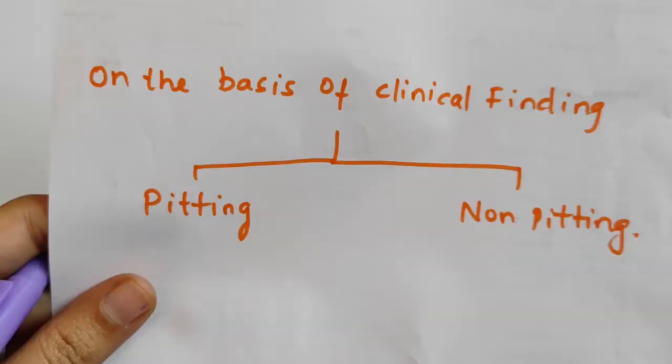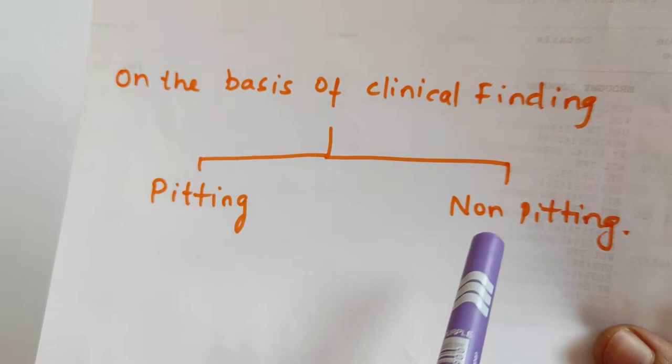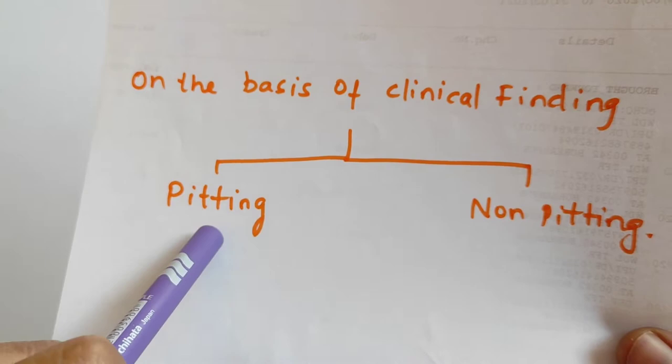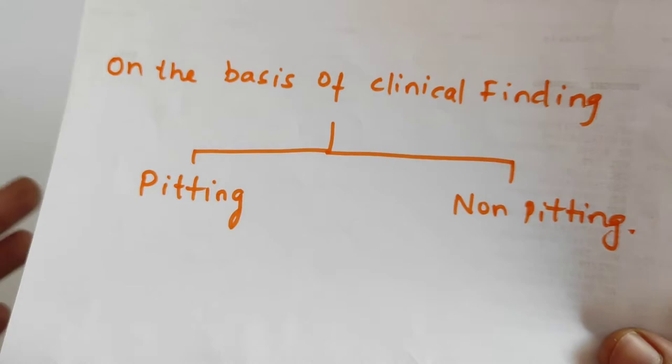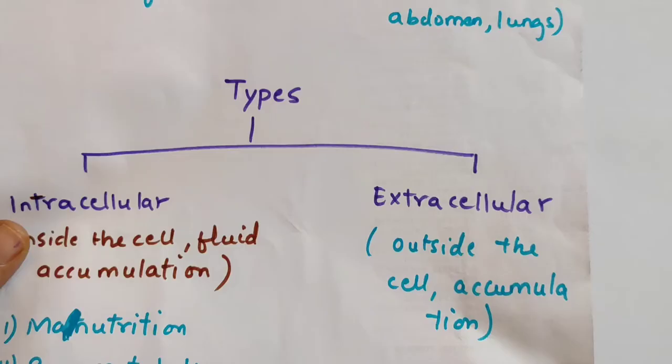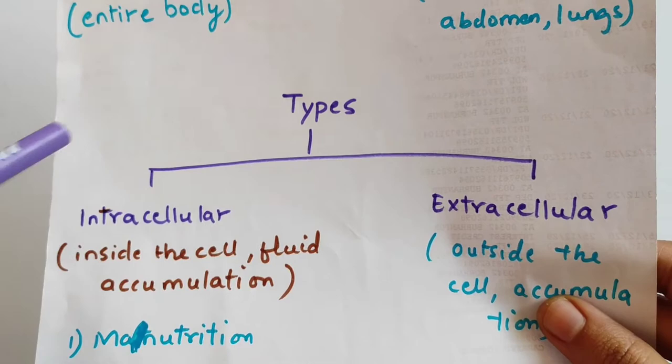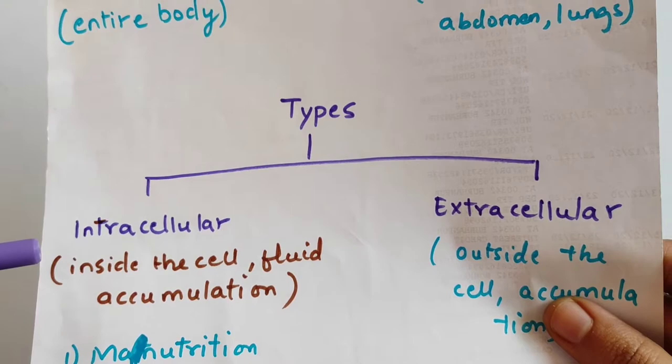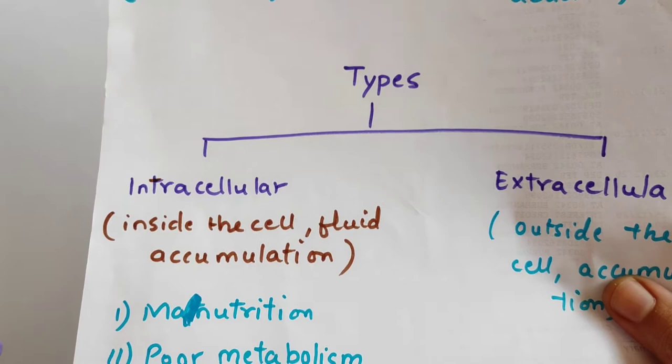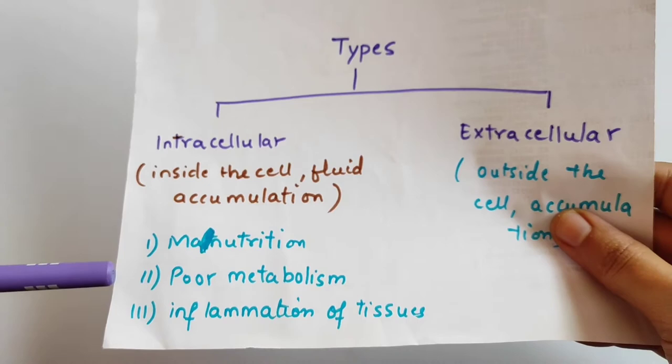The third classification is intracellular and extracellular. When the fluid accumulates inside the cell, we call it intracellular edema. When fluid accumulates outside the cell, we call it extracellular edema. Intracellular edema conditions include malnutrition, poor metabolism, and inflammation of tissues.